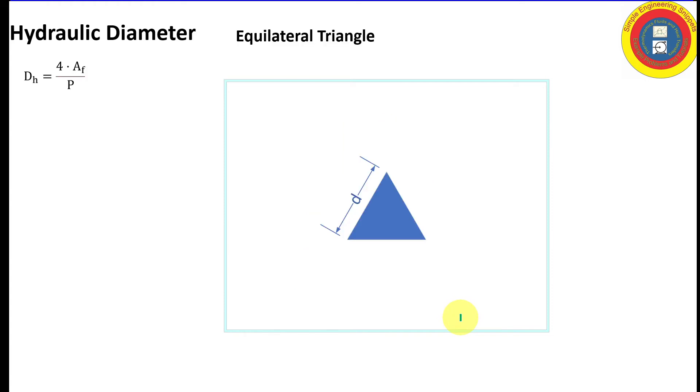Next is an equilateral triangle. The area for a triangle is one half times the base times the height. In this example the base is little d, the side of each of the three sides of the equilateral triangle. And the height from geometry and trigonometry is d times the square root of 3 over 2. Plugging that into our equation for the flow area we get that the flow area is equal to d squared times square root of 3 over 4.